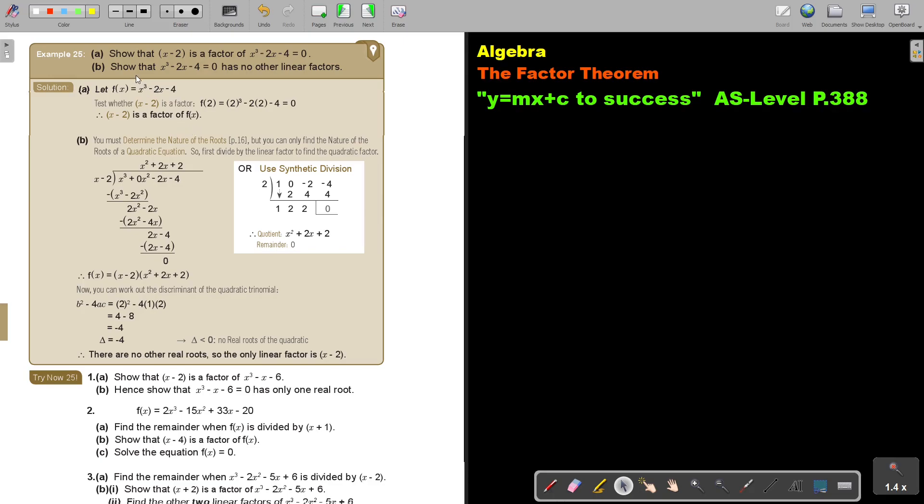Now, show that this has no other linear factor. You cannot - I think sometimes people just think, oh, it's nature of the roots. The nature of the roots is just for quadratic equations, it's not for cubic equations. So what you must do is you must first take this factor out of this cubic equation to make it a quadratic equation, and then you can prove the nature of the roots.